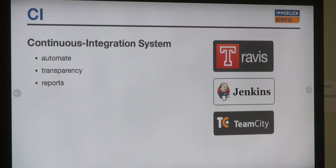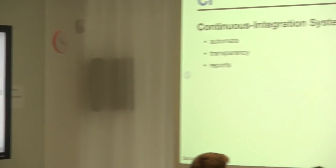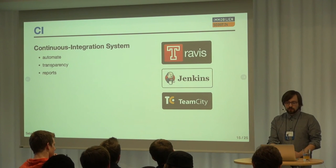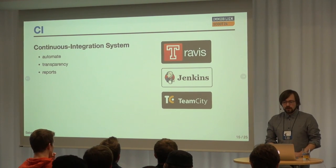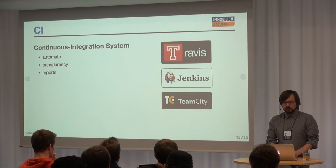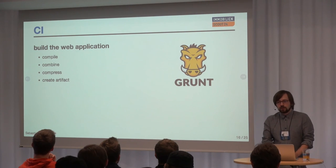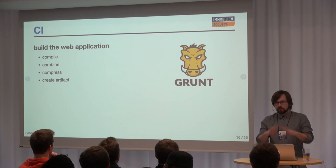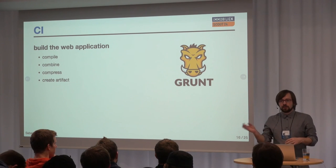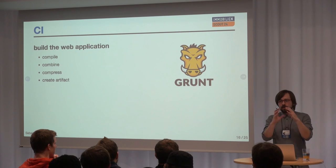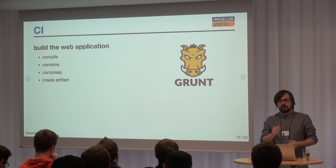First is the CI system. There are many CI systems out there. They really help you, especially if you're working in a team — they give you a lot of transparency about what others did, whether they broke the code, or checked in thousands of files. There is mostly a front-end page for the integration system where you can check this information and read reports.